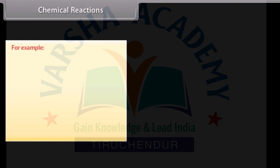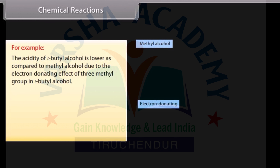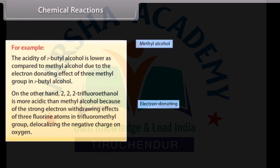For example, the acidity of tert-butyl alcohol is lower compared to methyl alcohol due to the electron-donating effect of 3 methyl groups in tert-butyl alcohol. On the other hand, 2,2,2-trifluoroethanol is more acidic than methyl alcohol because of the strong electron-withdrawing effect of 3 fluorine atoms in the trifluoromethyl group, delocalizing the negative charge on oxygen.